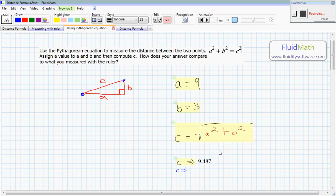So, well, this is good. You can see that our ruler estimate was pretty close. This says the answer is 9.48 approximately.